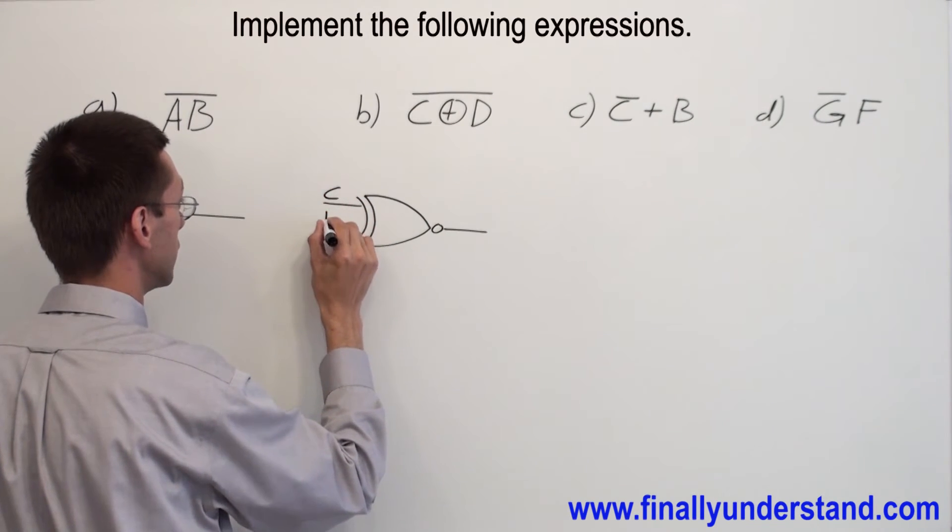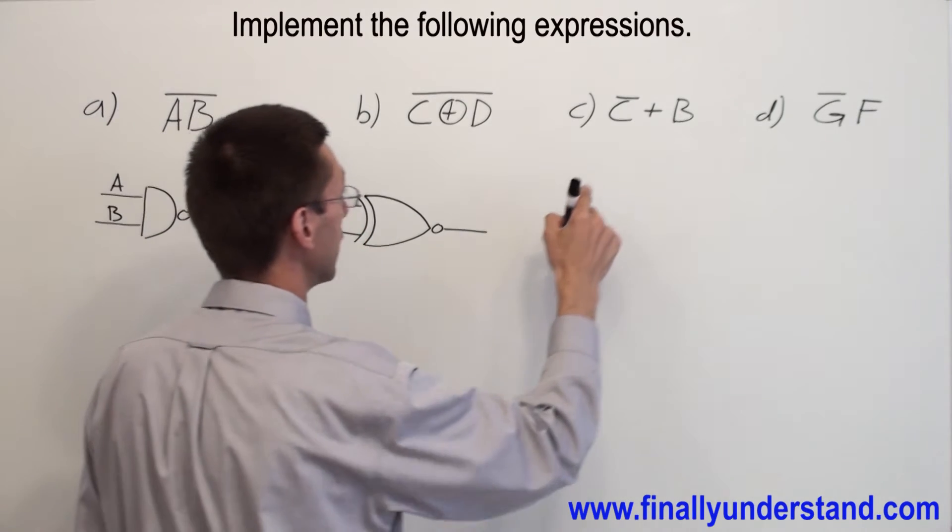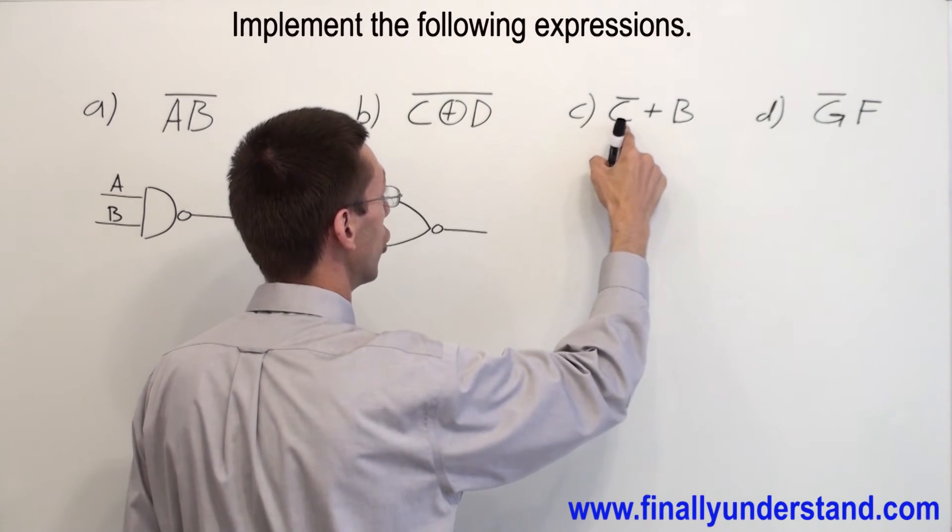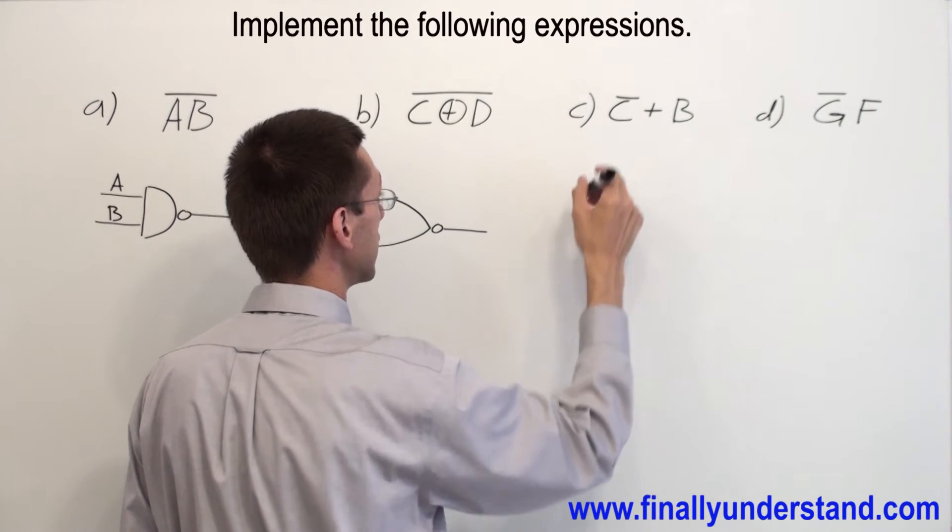This is C, D. Now let's take a look at this example. This is an OR gate, but C has to be connected to the inverter.